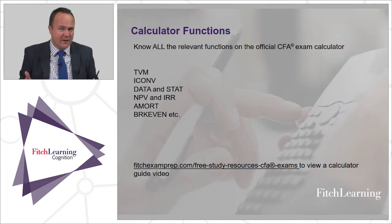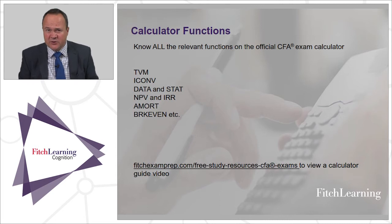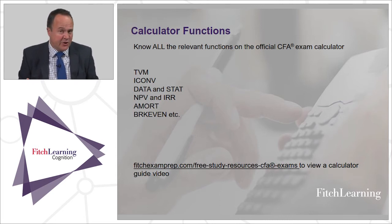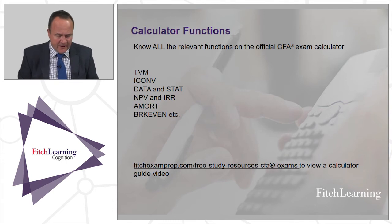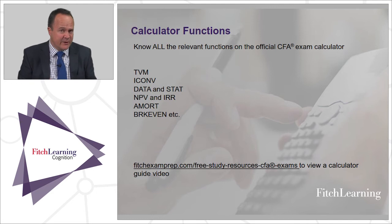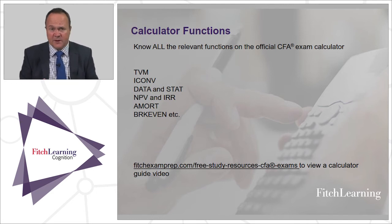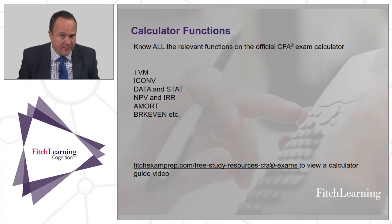Data and Stat is again pretty crucial for working out things like standard deviation and potentially correlation, but it's mostly standard deviation. Make sure you can distinguish between population standard deviation, which uses Greek letters — sigma — and sample standard deviation, which uses Roman letters — S. Data and Stat can save you a lot of time.